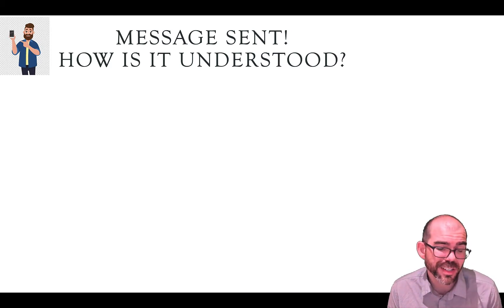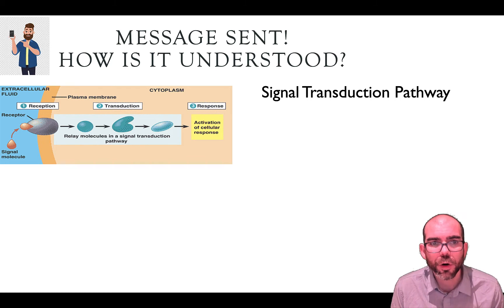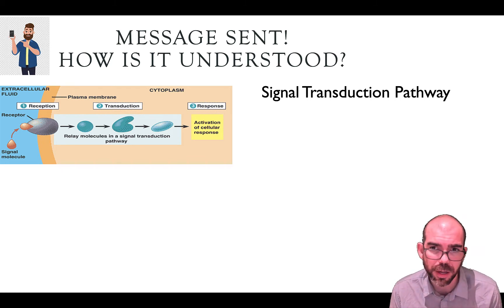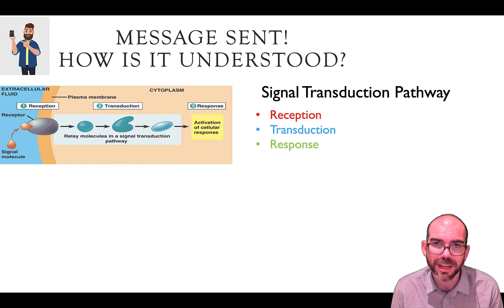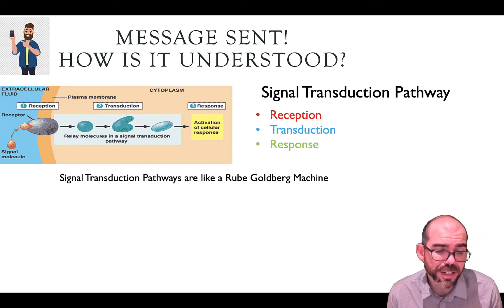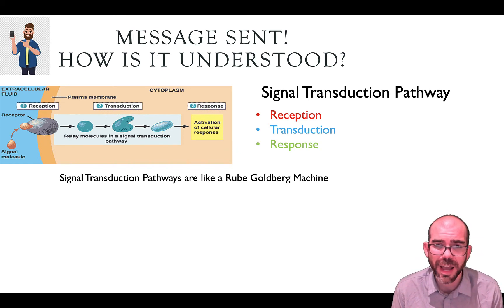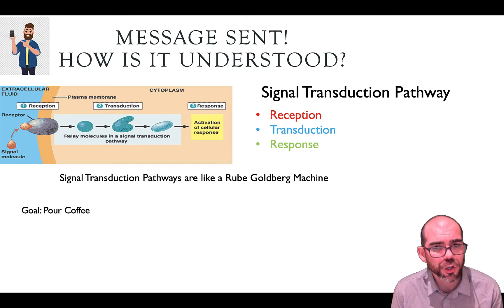So once the message is sent, how is it going to be understood? In cells, we do this through a process called a signal transduction pathway. A signal transduction pathway has three parts: reception — you're receiving the signal; transduction — the message is being carried through; and some kind of response in light of the signal. To understand the different parts of a signal transduction pathway, think of them like a Rube Goldberg machine.